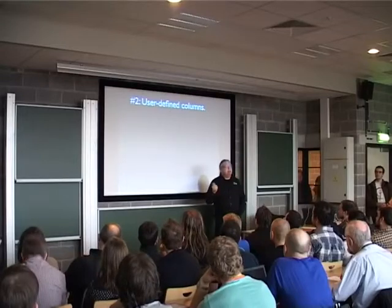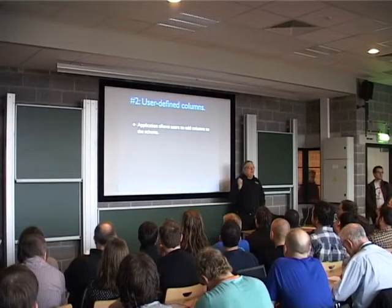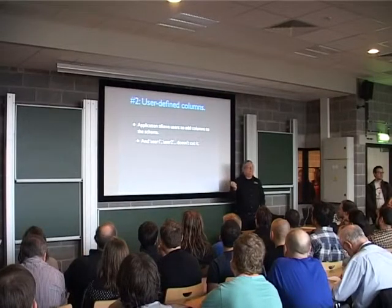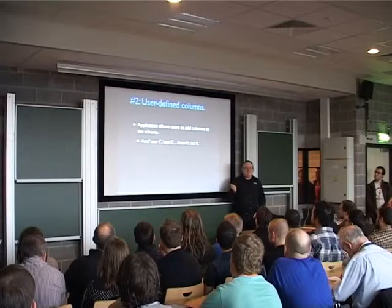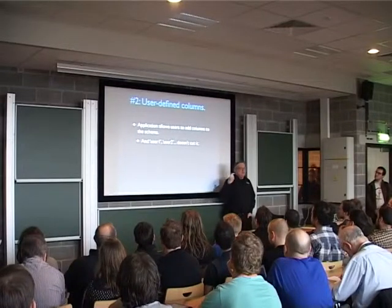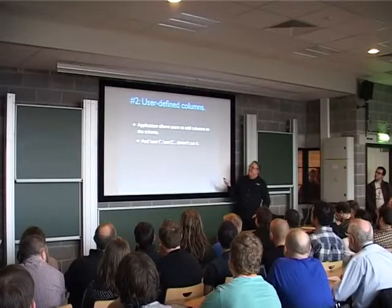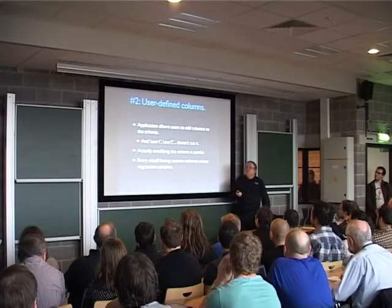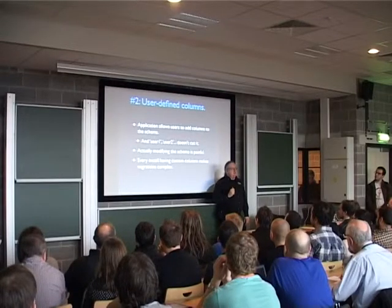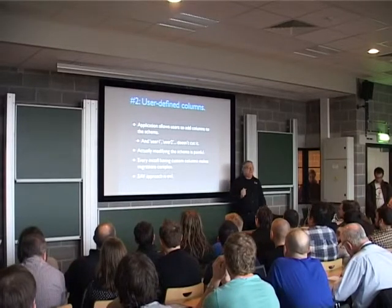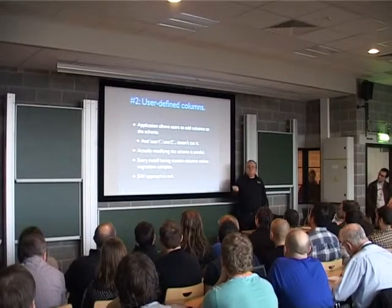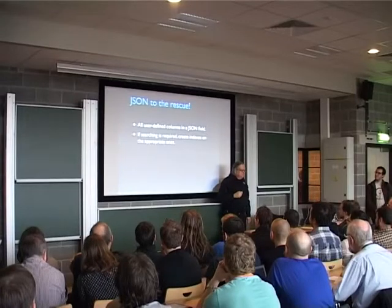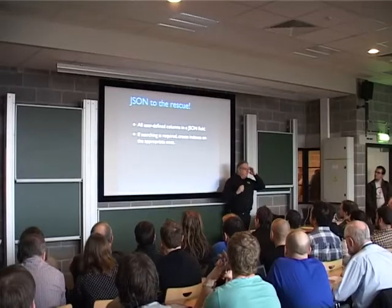Another use case: user-defined columns. You're shipping a package system, an accounting system, anything, and you allow the user to define their own columns or attributes for things. You kind of don't want to create five things and call them user1, user2, user3 — anytime you're a programmer and you start writing things like that, you should get a rash telling you this is obviously not the right answer. We could modify the schema at runtime and add the column, but that's painful — a lot of code — and it means every install is a little different in its schema, making migration scripts more complicated. You could use an EAV thing, but EAV is bad and you should never do it. This stands for entity attribute value and we will never speak of this again.